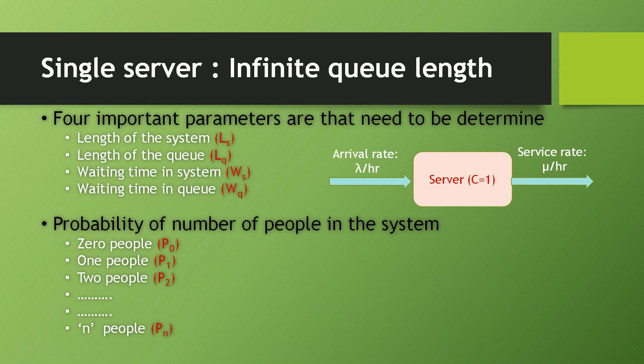The first infinite represents the queue length in the system, and the second infinite represents the population in the system. There are four basic parameters which we have to determine when solving a question: length of the system Ls, length of the queue Lq (which depends on Ls), waiting time in the system Ws, and waiting time in the queue Wq (which depends on Ws). We also calculate the probability of number of people in the system — P0 for zero people, P1 for one person, and Pn for n people in the system.